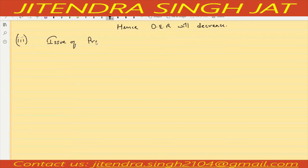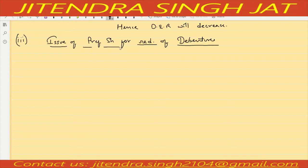Case 3: issue of preference shares for redemption of 13% debentures worth 10 lakh. Redemption of debentures means repayment of debentures — debenture is debt. So we have issued preference shares for the redemption of debentures. Our debt equity ratio is debt upon equity. When we issue preference shares, our equity will increase.